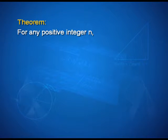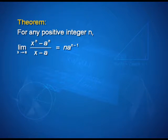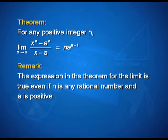Now let us look into an important theorem. For any positive integer n, limit of (xⁿ minus aⁿ) upon (x minus a) as x tends to a equals n into a to the power n minus 1. An important remark: the expression in the theorem for the limit is true even if n is any rational number and a is positive.